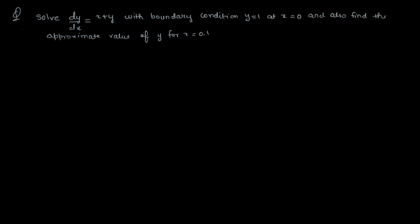Here you can see that dy/dx is given to you, and the boundary condition — the initial value — is that at x=0, y=1. You need to find out the value of y when x is 0.1.